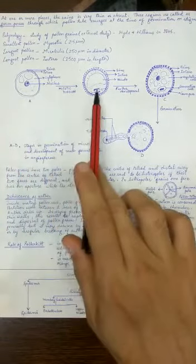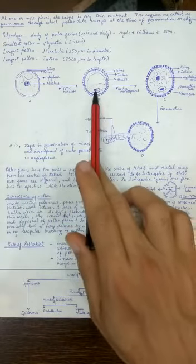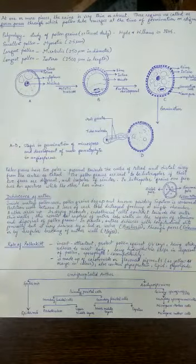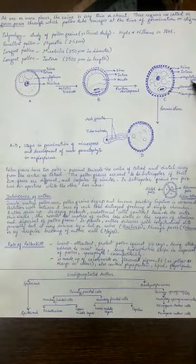It undergoes mitosis to form a bigger cell and a smaller cell. Remember, the nucleus will be equally divided, but the cytoplasm is unequally divided. One cell becomes a big one, which is called as the vegetative cell.